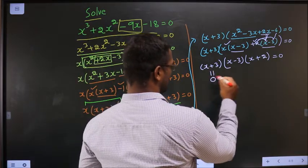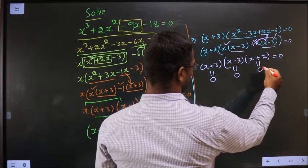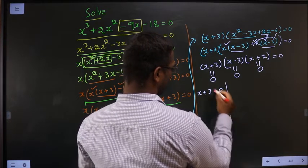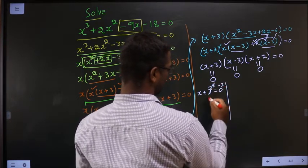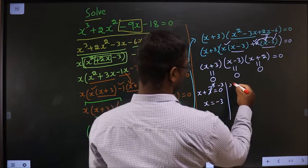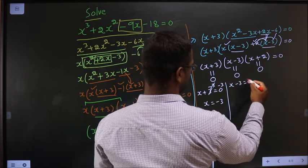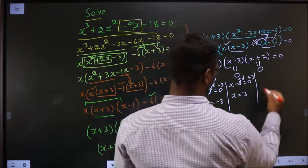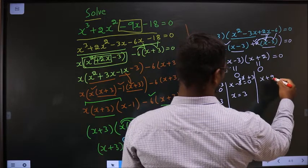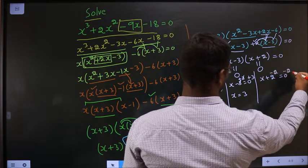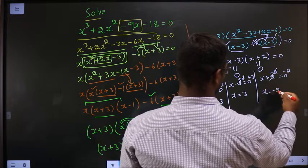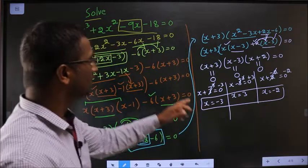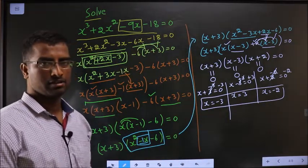So now, either this equal to 0 or this equal to 0 or this equal to 0. So when x plus 3 equal to 0, take minus 3 on both sides, so x equal to minus 3. If x minus 3 equal to 0, take plus 3 on both sides, so x equal to 3. x plus 2 equal to 0, take minus 2 on both sides, this cancels out, x equal to minus 2. So these are the values of x satisfying our equation.